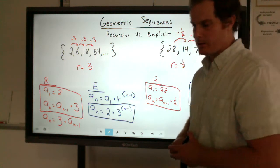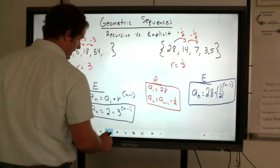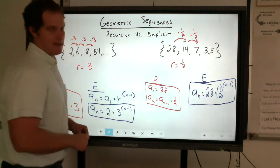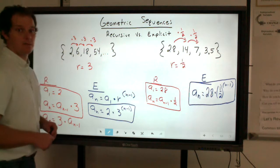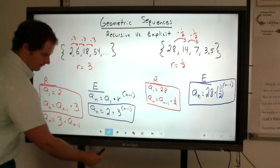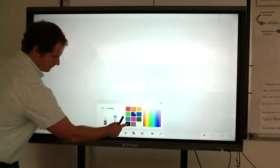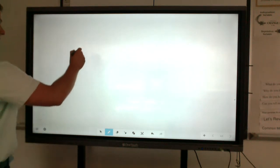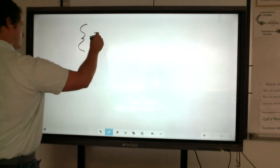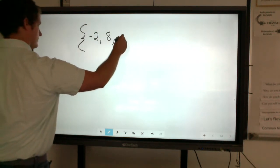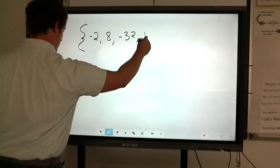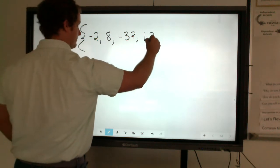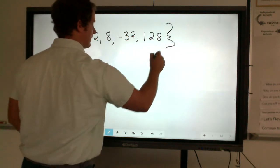Now, we're going to do one more example, and this time we're going to look at what happens when we have a negative common ratio. So let's do this sequence. So we've got negative 2, we've got 8, negative 32, and then 128.